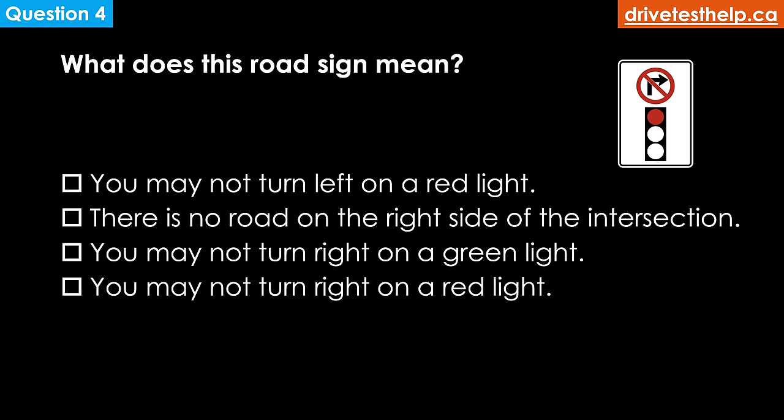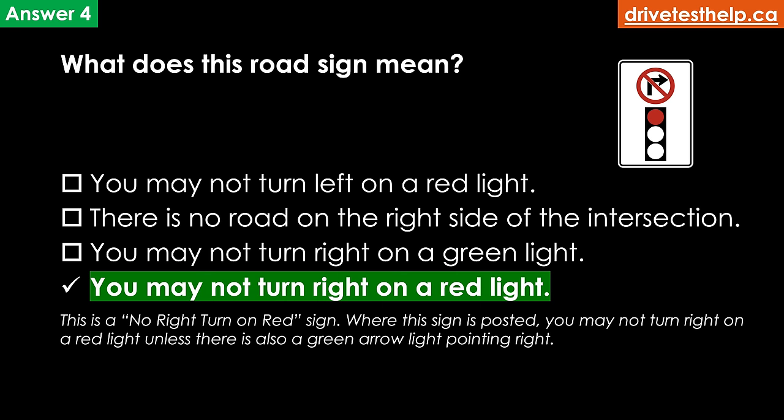What does this road sign mean? Options: you may not turn left on the red light; there is no road on the right side of the intersection; you may not turn right on a green light; you may not turn right on a red light. The correct answer is you may not turn right on a red light. This is a no right turn on red sign. Where this sign is posted, you may not turn right on a red light unless there is also a green arrow pointing right.